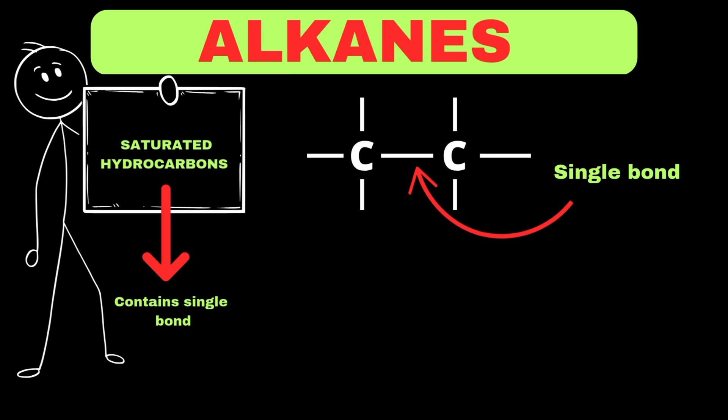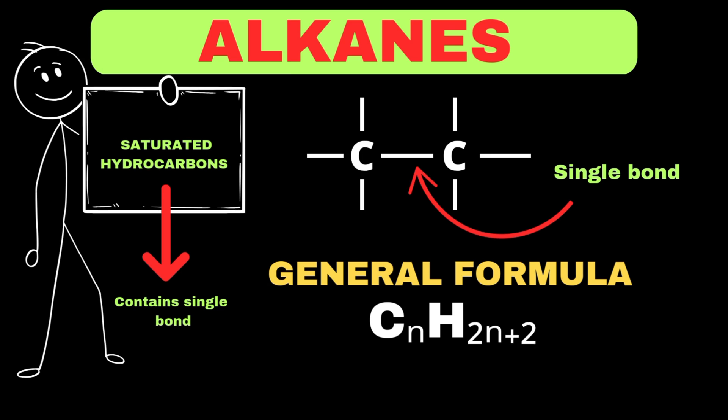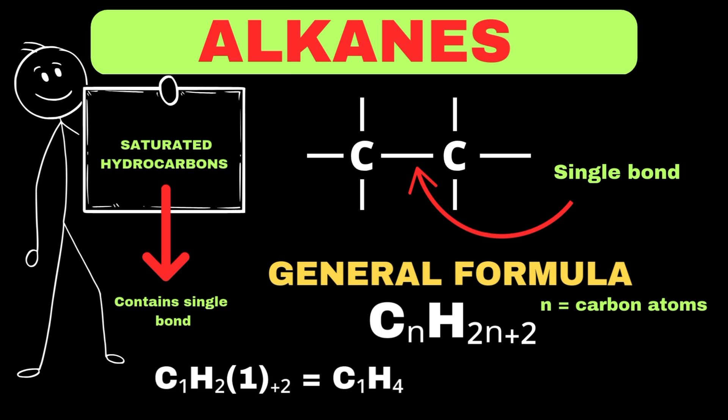The general formula of alkanes is CnH2n+2, where n represents the total number of carbon atoms present in the alkane. Applying this formula: if the number of carbon atoms is equal to 1, we get methane with the formula CH4. Keep in mind that methane is the simplest alkane.